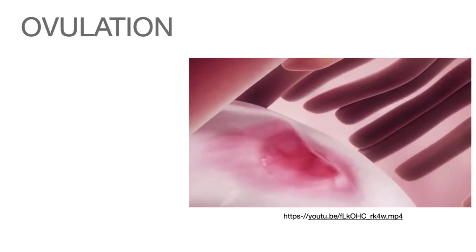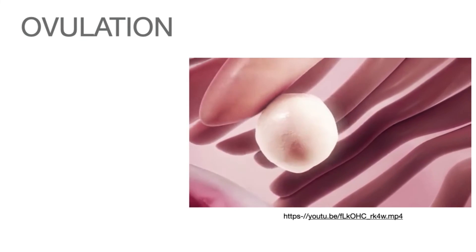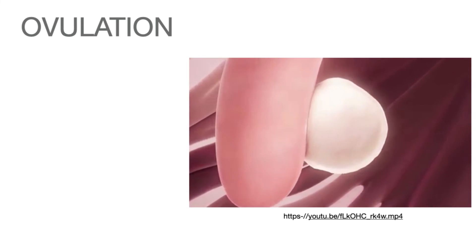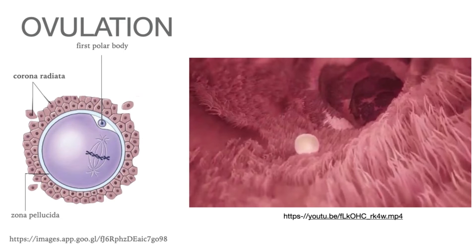In the process of ovulation, the secondary oocyte is released from the Graafian follicle and will be caught by the fimbria of the fallopian tube. The oocyte will travel down the oviduct and stay in the ampulla of the fallopian tube where fertilization usually occurs. If the oocyte is not fertilized within 24 hours, it will degenerate and be resorbed within the oviduct. The secondary oocyte is enveloped by two layers during release: the outer corona radiata and the inner zona pellucida.